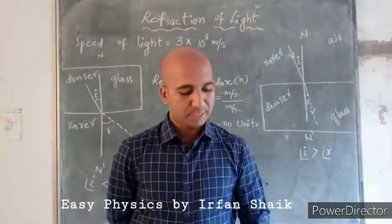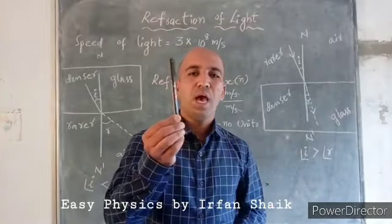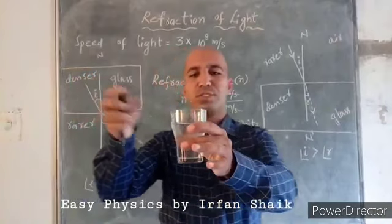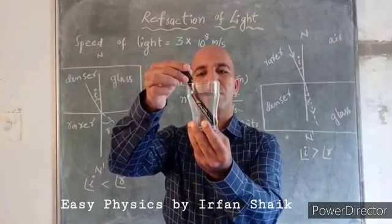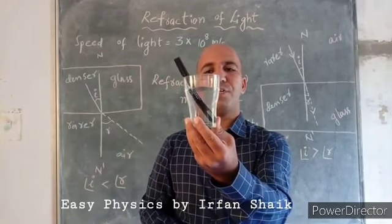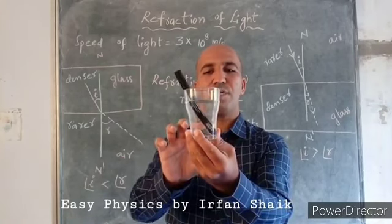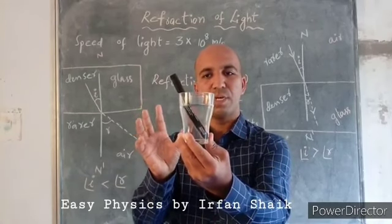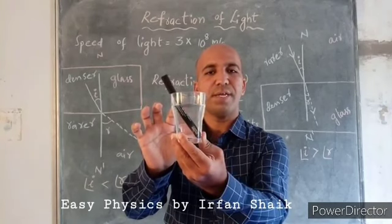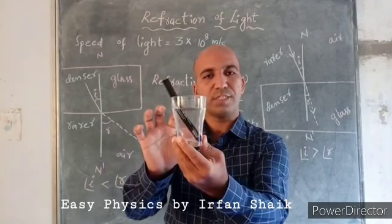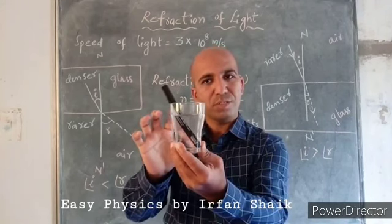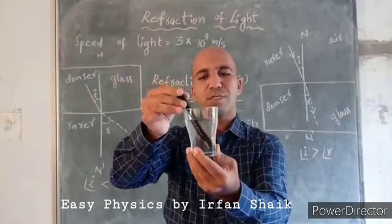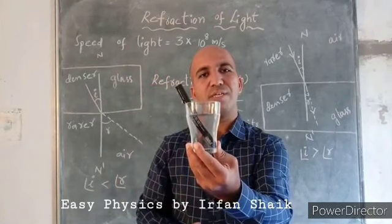Let us try to understand this with some examples. I have a pen, and I am going to put this pen into this glass of water. Observe carefully. You can observe the difference in the pen which is inside the water and which is outside the water. The part of the pen inside the water looks bigger than its original size. At the interface — where water and air meet — the pen looks like it has bent. But the pen is not bent; it is straight. When I put this pen into the water, it looks like it has bent. This quality of light is called refraction.